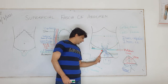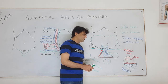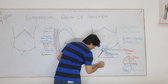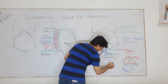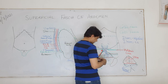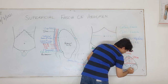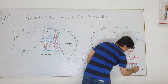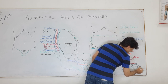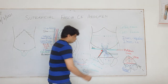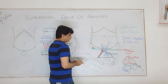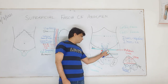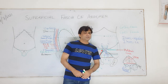Similarly, its attachment on the ischiopubic ramus prevents the spread of urine to the medial side of the thighs. At these points on the two sides of the anal canal there is a potential space - this is called ischio-anal fossa or ischiorectal fossa. The attachment to the posterior margin of the urogenital membrane prevents the spread of extravasated urine into the ischio-anal fossa also.